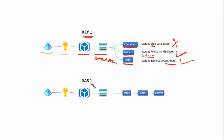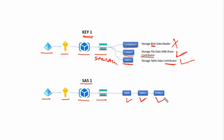Now we check user1's access to storage1 using the shared access signature. Looking at the tenant account, subscription, resource group, and storage account: as per the exhibit for sas1, only table services were accessible, and under table services, table1 and its entities are accessible.